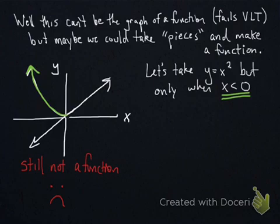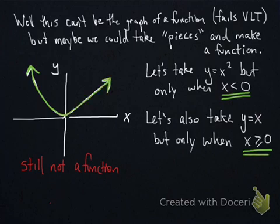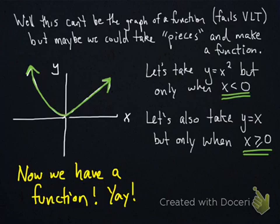But maybe if we take a piece of the y equals x graph as well. Maybe let's take the piece of y equals x, where x is only bigger than 0, so I'll erase the less than 0 portion. Now this looks like a function, doesn't it? It passes the vertical line test, that's awesome. Now we need to know what is its equation.